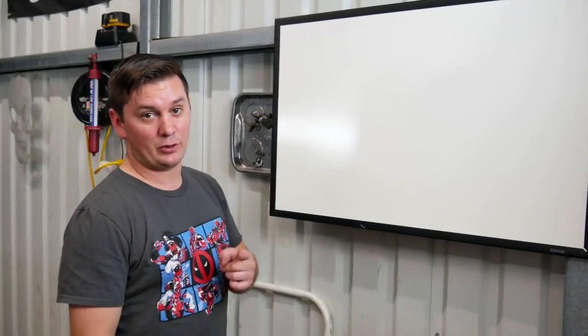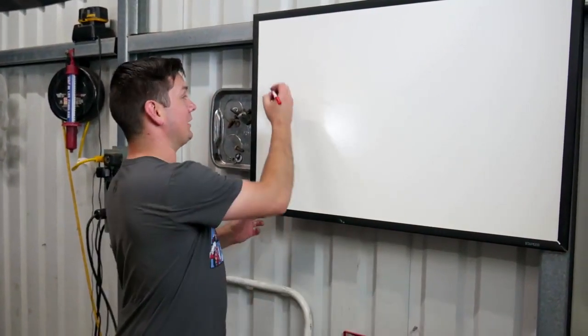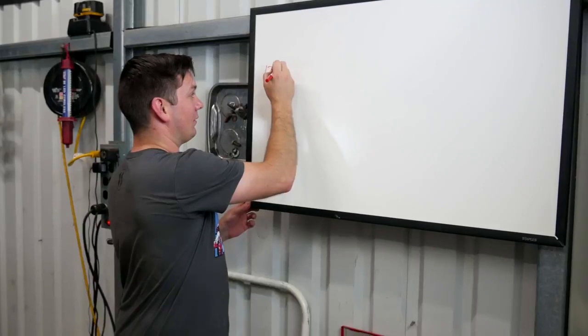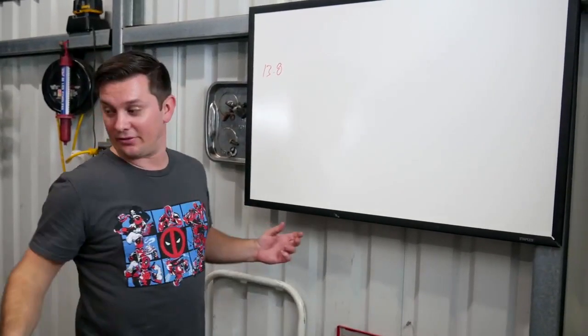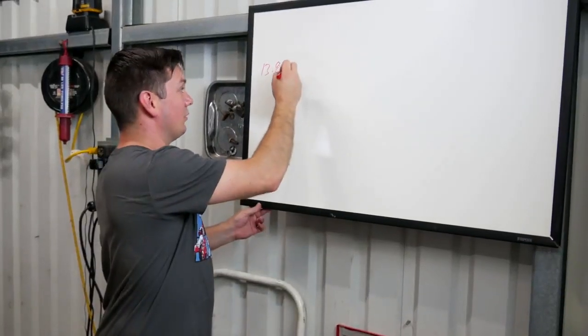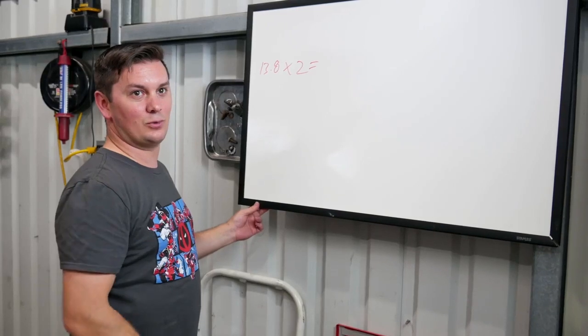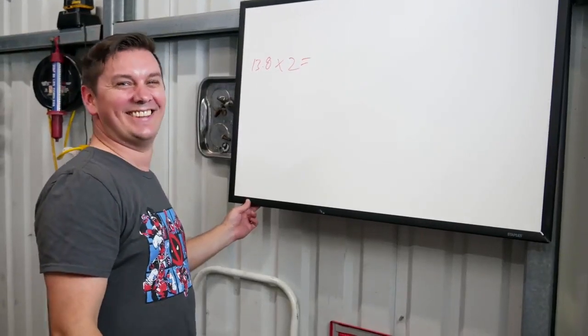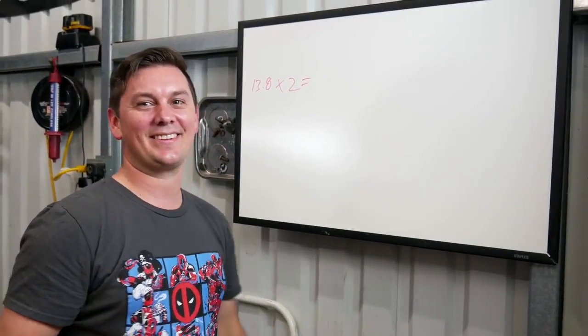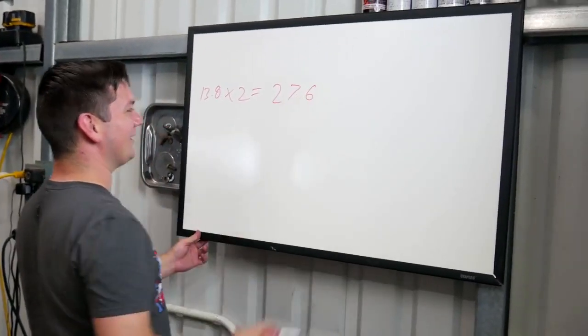So, I counted how many times the driveshaft rotated when he spun the wheel 10 times. I got roughly 13.8. Okay, so 13.8. You need to multiply that by 2 since you have two tires and we only spun one. So multiply that by 2 and what's that like 27.4. What? 27.6. I was so close. 27.6.